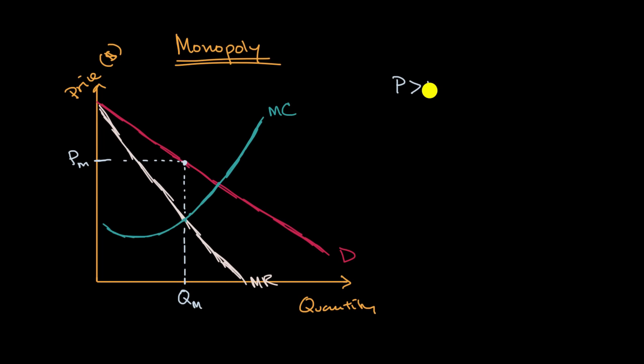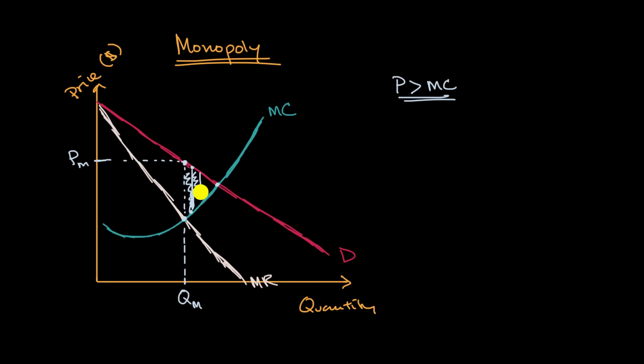We're producing a quantity where price is greater than marginal cost — you can see it right there. This difference is a markup that is possible for a monopoly firm, which would not be possible for a perfectly competitive firm. This also introduces the idea of deadweight loss, because at a higher quantity, people were willing to pay more than the marginal cost, suggesting a market benefit that could be gained. But because of what is rational for this monopoly firm and the insurmountable barriers to entry, this benefit is not captured — and so you have deadweight loss.